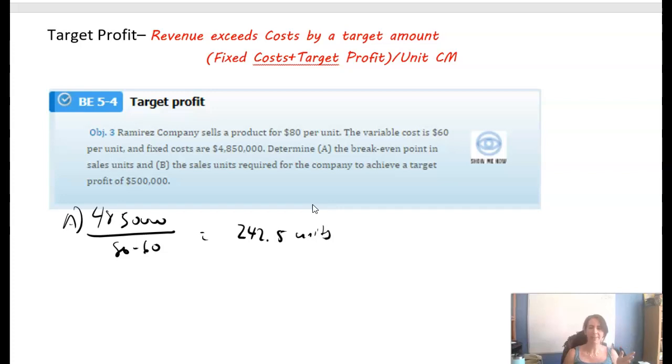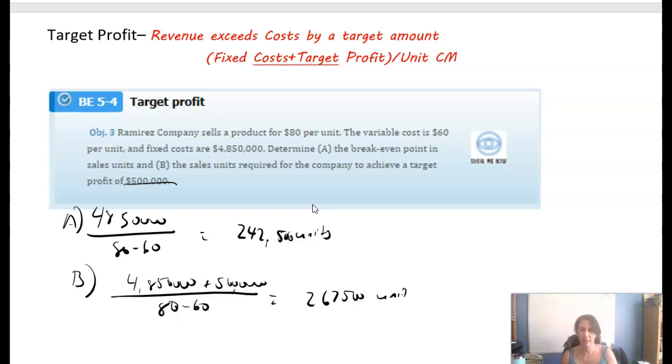So that's where we stand now, but that's not what we want. We also want a profit of $500,000. So we're going to change our numerator now. Instead of just $4,850,000 in fixed costs, we also want to make a profit of $500,000, all divided by the unit contribution margin which didn't change, 80 minus 60. That comes out to be 242,500 units. We would expect that we had to sell more because we're trying to make a profit. That comes out to be 260,500 units, which makes sense because 500,000 divided by 20, that's the extra units that you've got here.